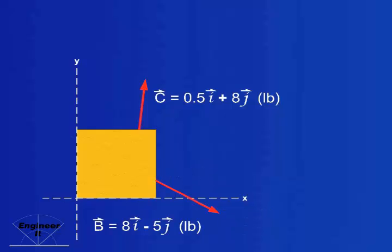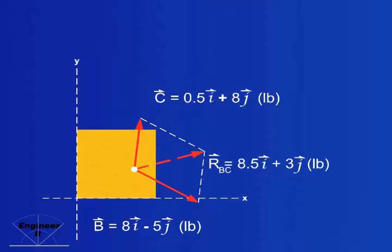Draw their lines of action, slide them to their concurrent point, and use parallelogram method to find that resultant BC equals 8.5i plus 3j in pounds.